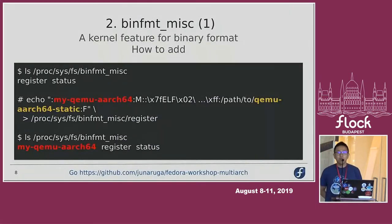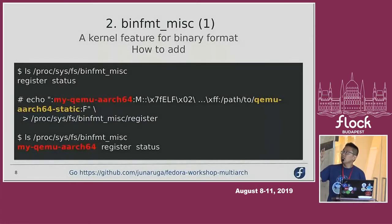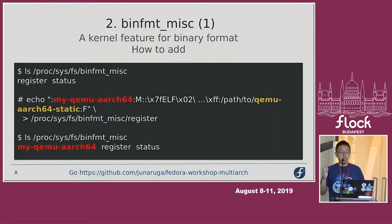The next step is about binfmt_misc. Actually, this is a kernel feature — binary format miscellaneous — that is useful to run ARC binaries without specifying the interpreter. The example shows how to add a binfmt_misc file. That is a special file. As a first condition, there are two files, register and status, under the /proc directory. Then, echo some magical string redirected to register. The string is a colon-separated string. Then, a new binfmt_misc file is created.